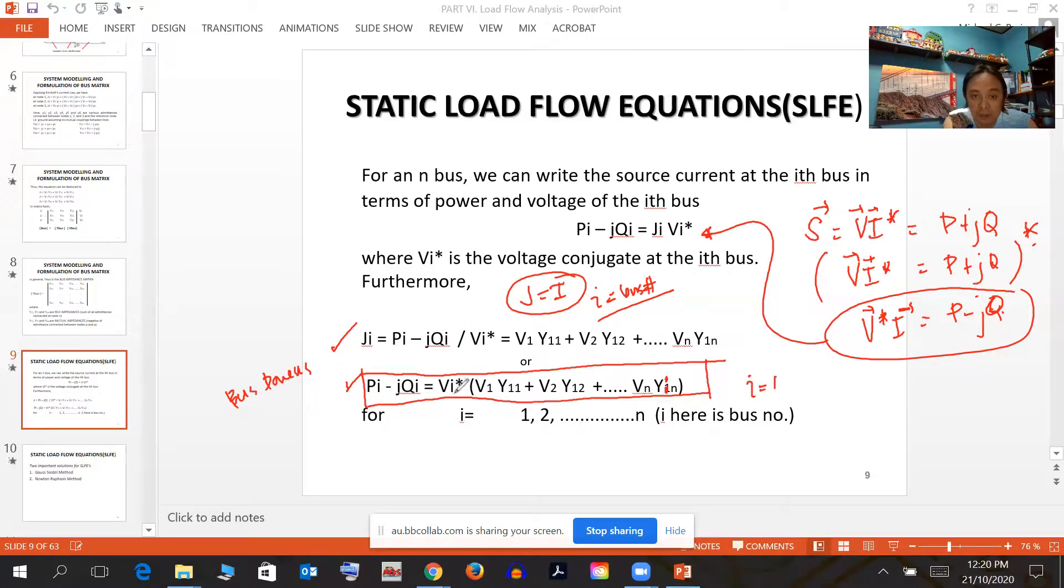If I change the conjugate by multiplying by the conjugate, the result will be that the current vector is the reference: P minus jQ. Wherein V_i is the voltage conjugate of the i-th bus, considering the current will be our reference.